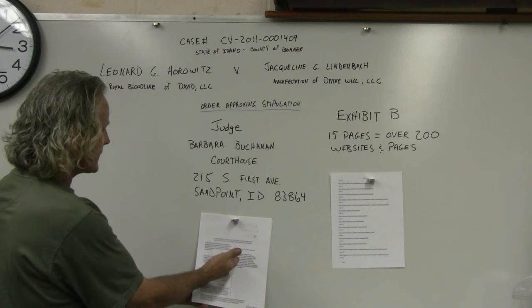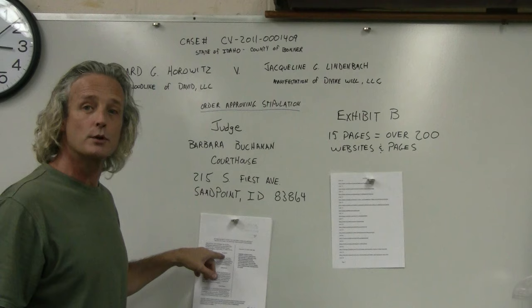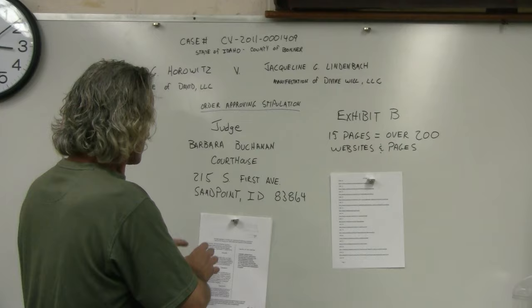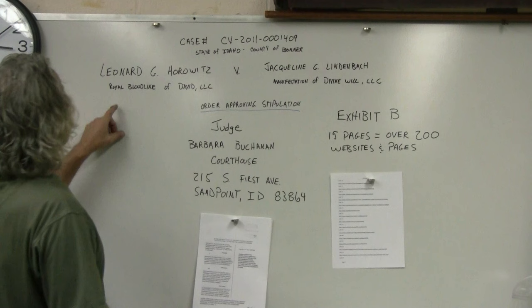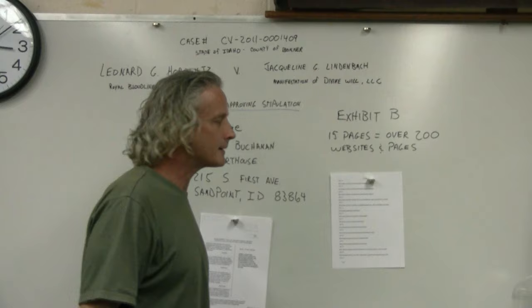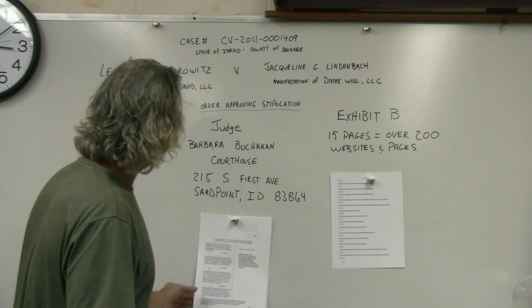The divorce has already taken place. This is an order approving stipulation which dissolves or explains how their business interests that they had together are going to be dissolved. Leonard G. Horowitz's company was the Royal Bloodline of David, LLC, and his ex-wife is the Manifestation of Divine Will, LLC. It's all in this court order.